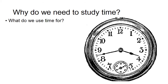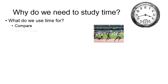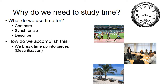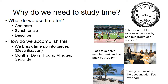So this is a clock — you've seen it — and we use it a lot to do things like compare, synchronize, and describe. For comparing, who's the fastest; synchronize, how do we get to a meeting; and describe, we give people information about when we went places. We do this by breaking things up into pieces to make it understandable, so we use months, days, hours, minutes, and seconds, because it allows us to communicate. We use the one that is best for each different type of activity — months for one and seconds for another.